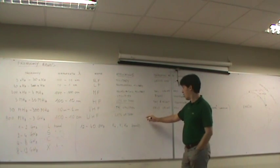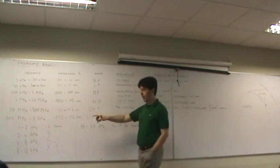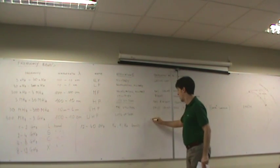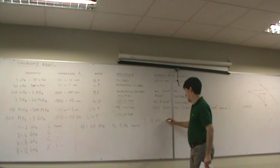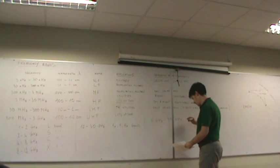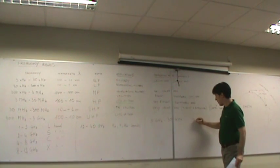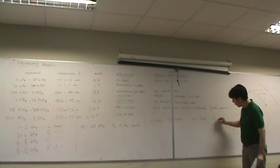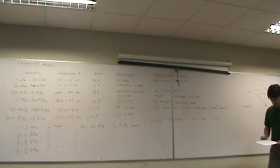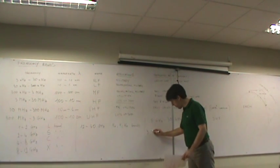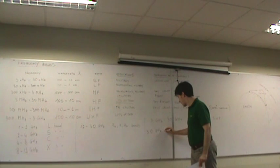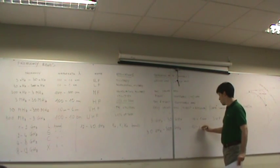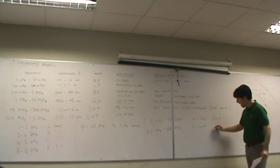Continuing with this parallel definition of bands: 3 GHz to 30 GHz, with wavelengths between 10 and 1 cm, are the SHF — super high frequencies. And eventually, 30 GHz to 300 GHz, with wavelengths of 10 to 1 mm, are the EHF — extra high frequencies.